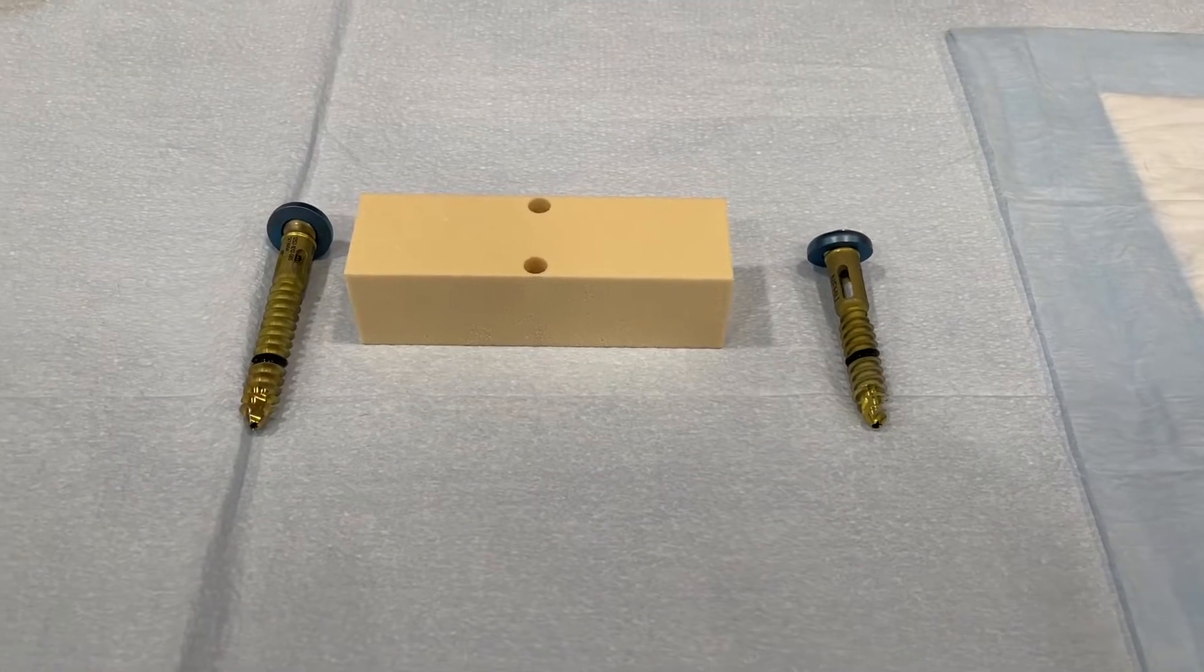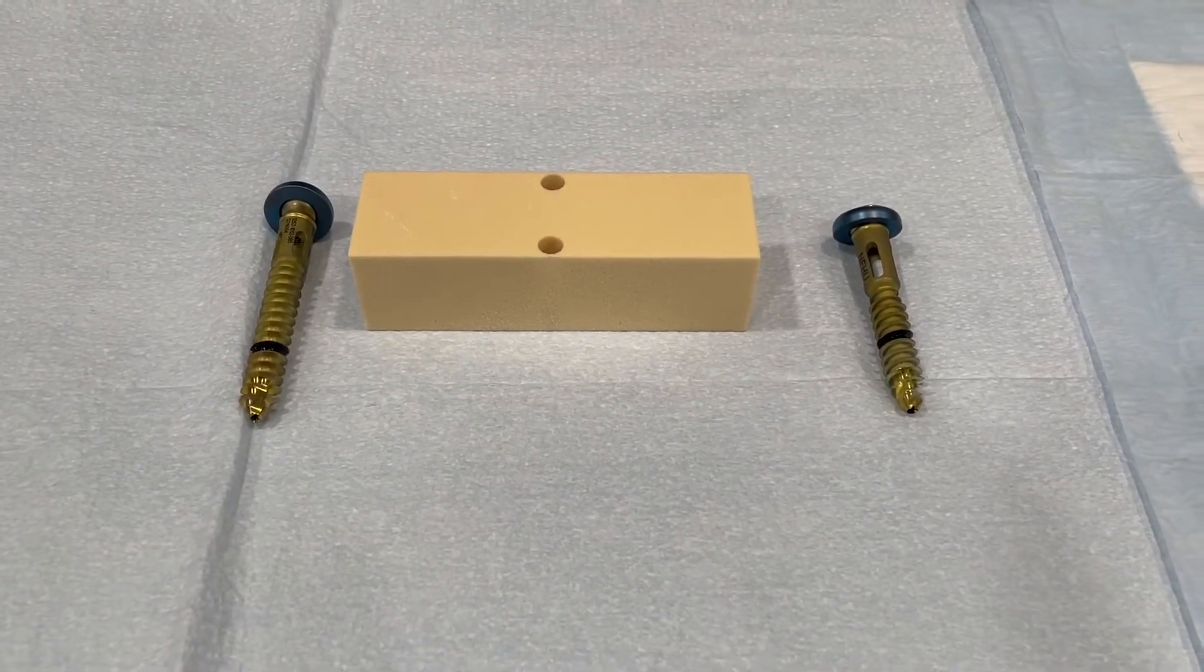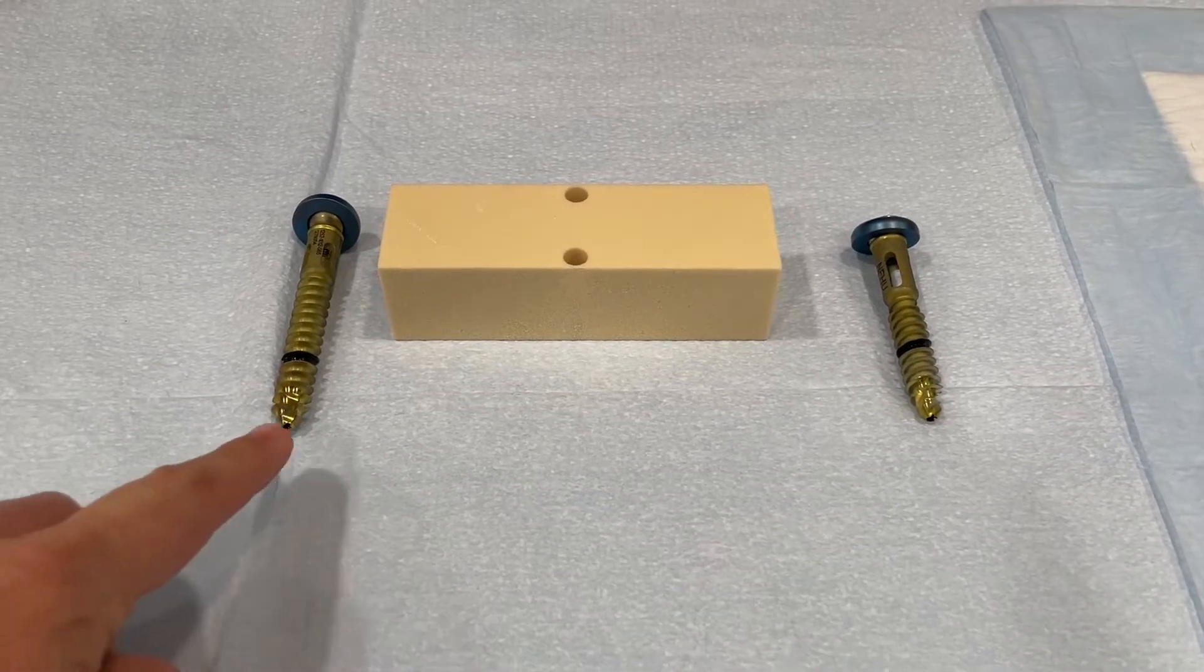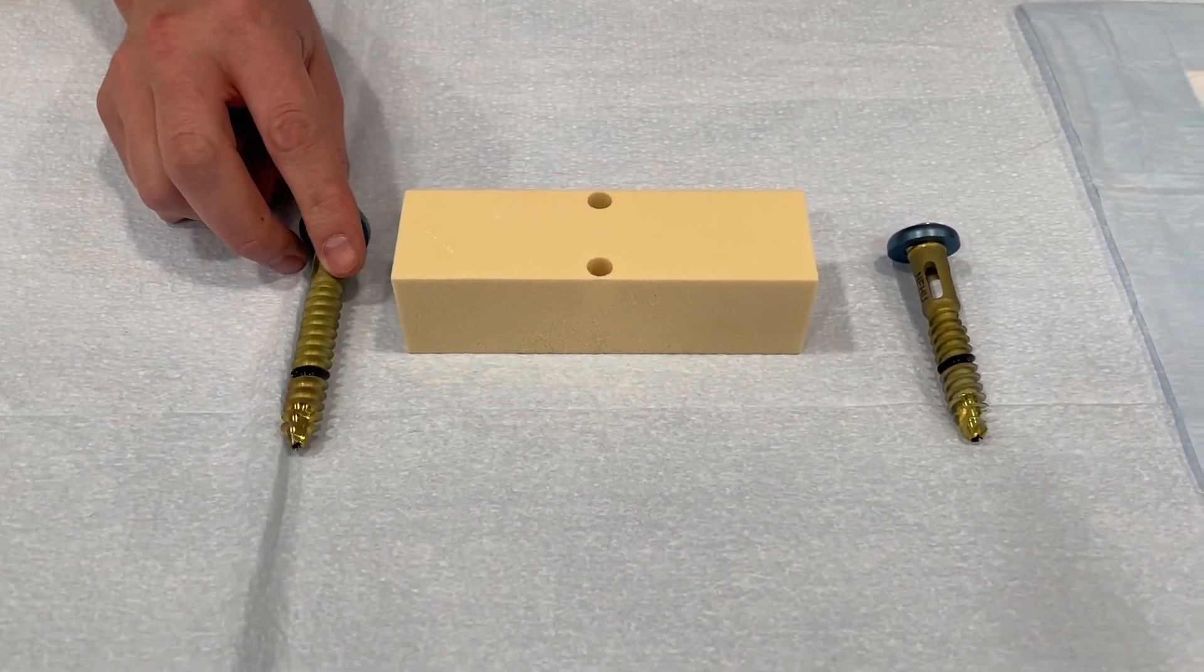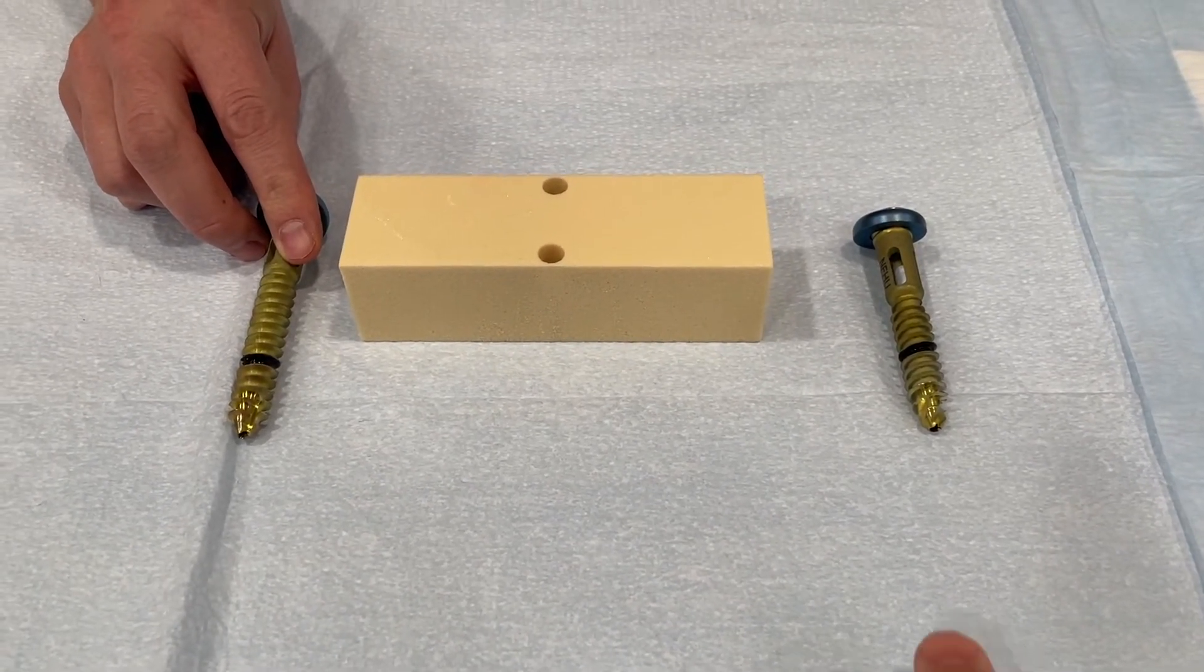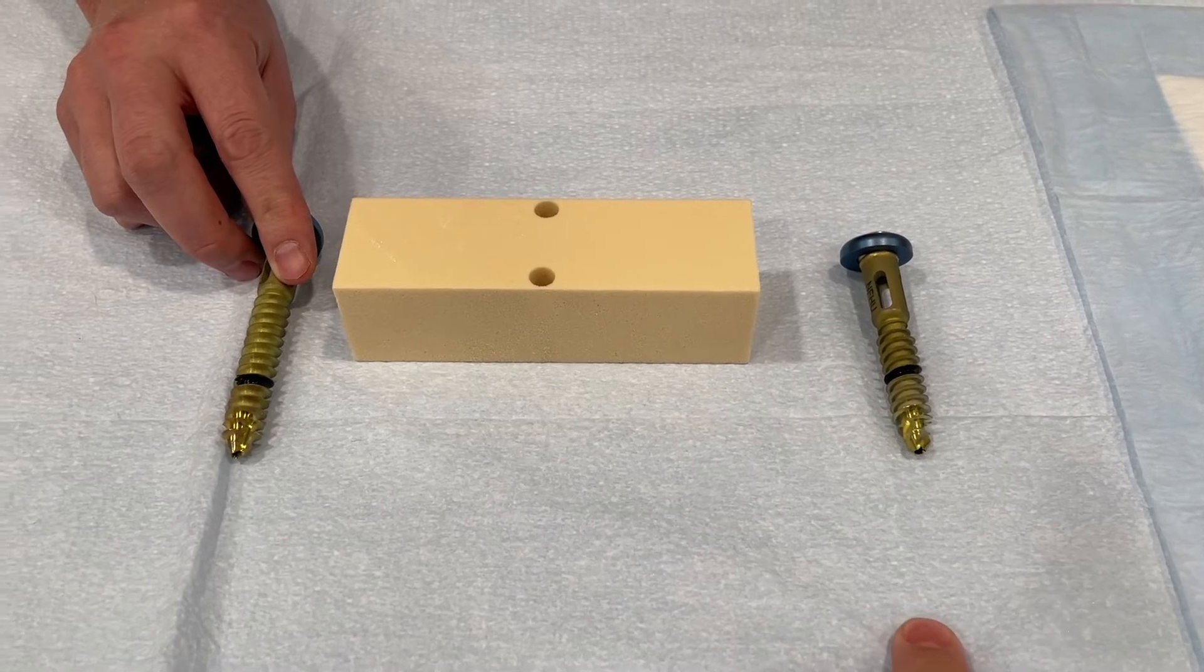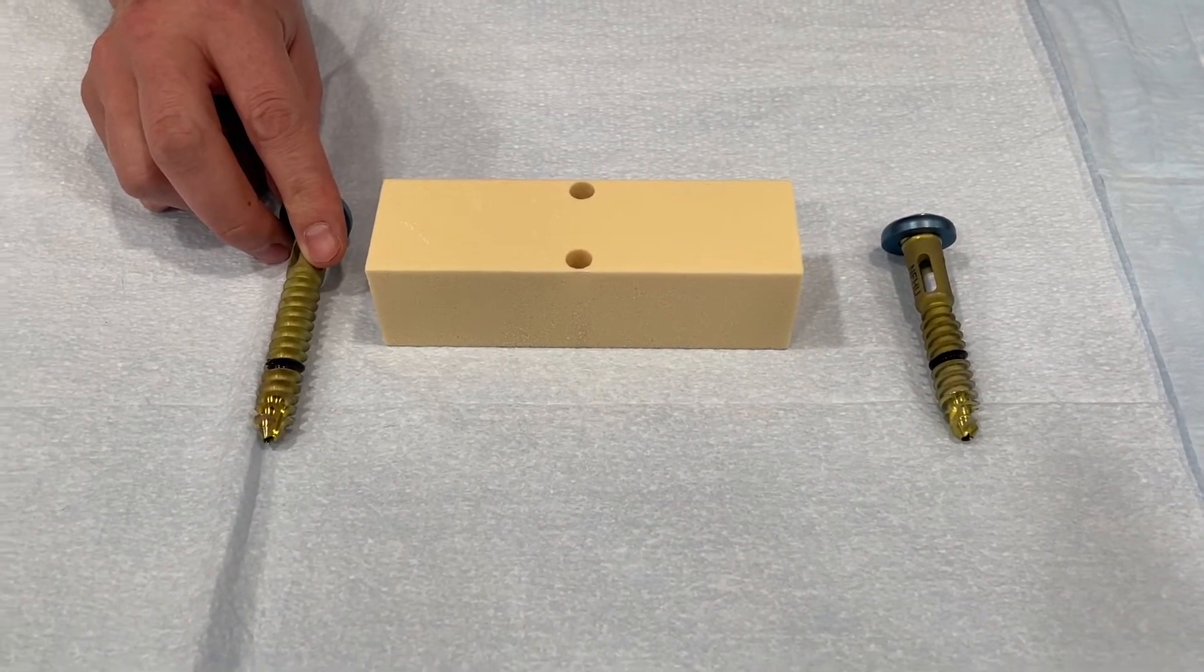Now we're going to do a test in this 15 PCF foam that mimics cancellous bone really well. We're going to put in a standard buttress style screw to show how a normal wedge style screw works in the bone, and then we'll do the exact same test with the UniFi MI and show the difference between a normal screw and a mechanically integrated screw.